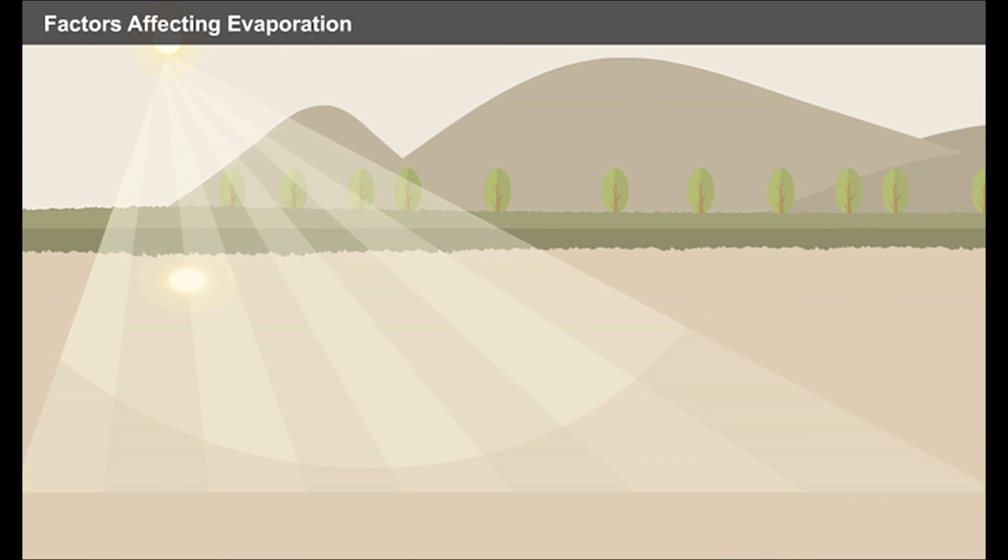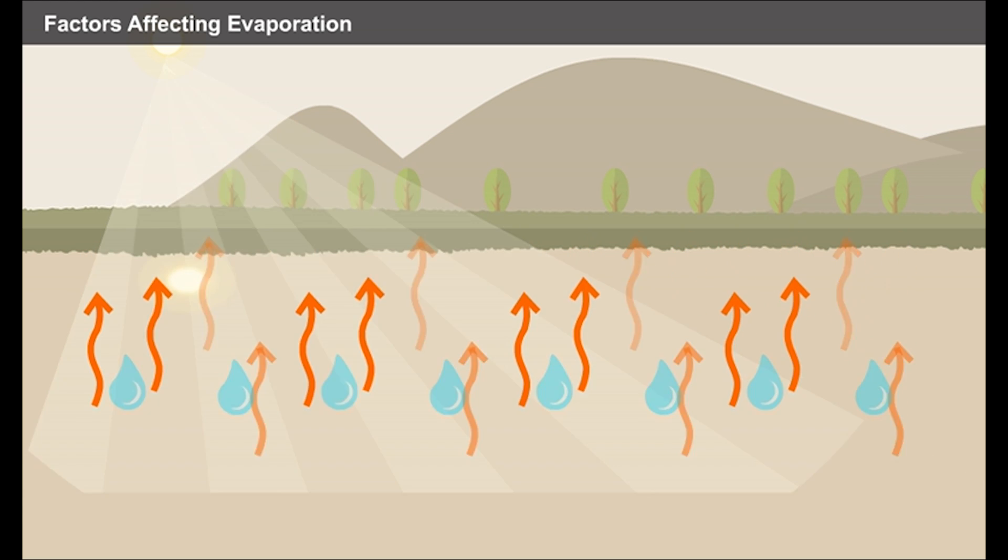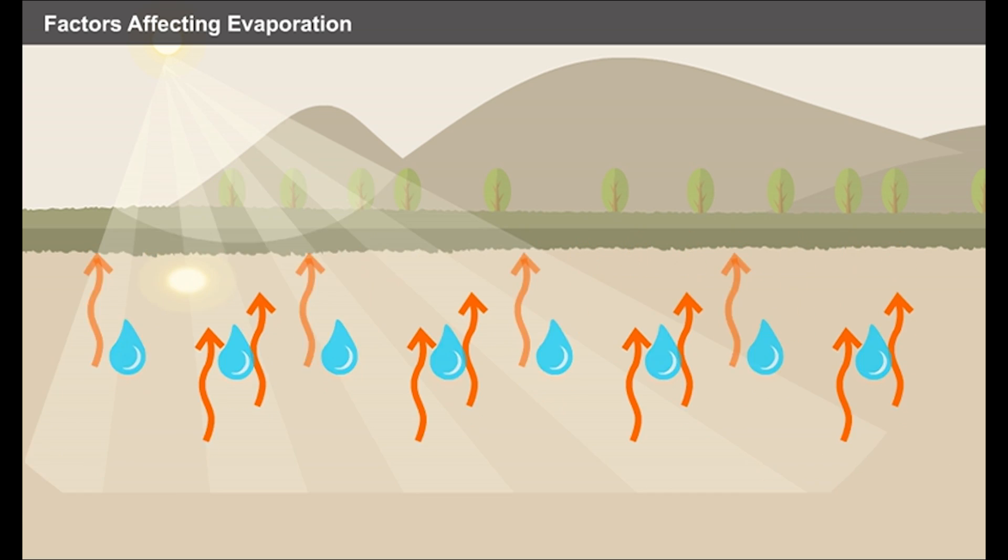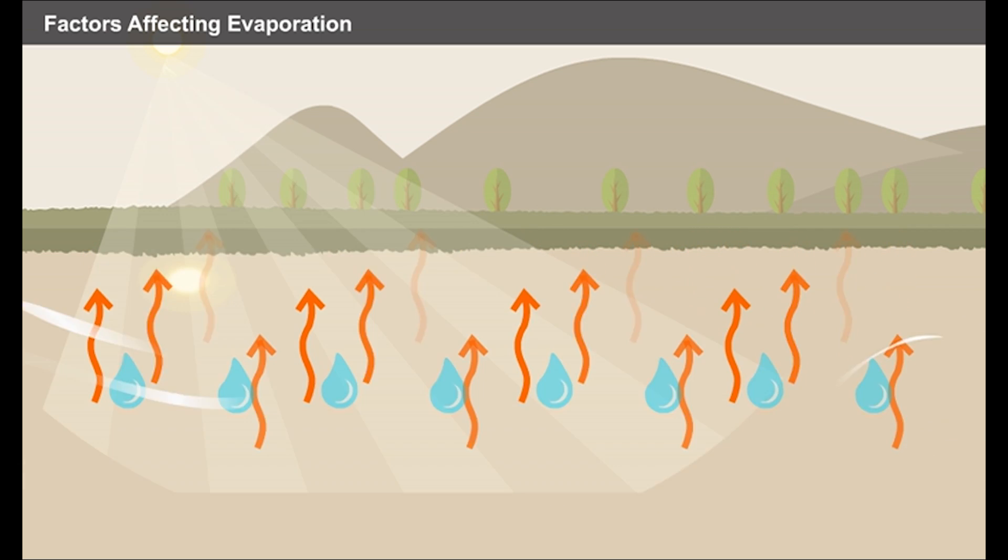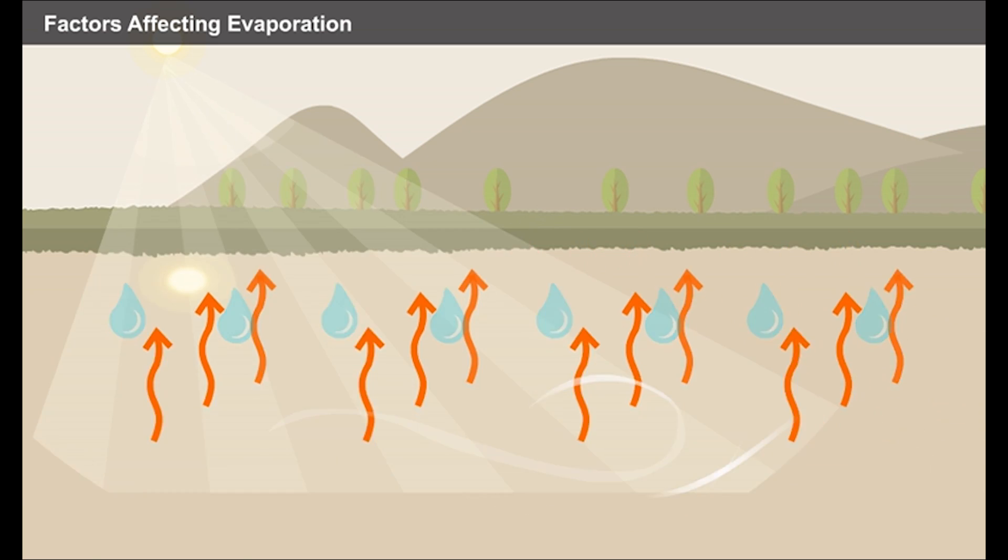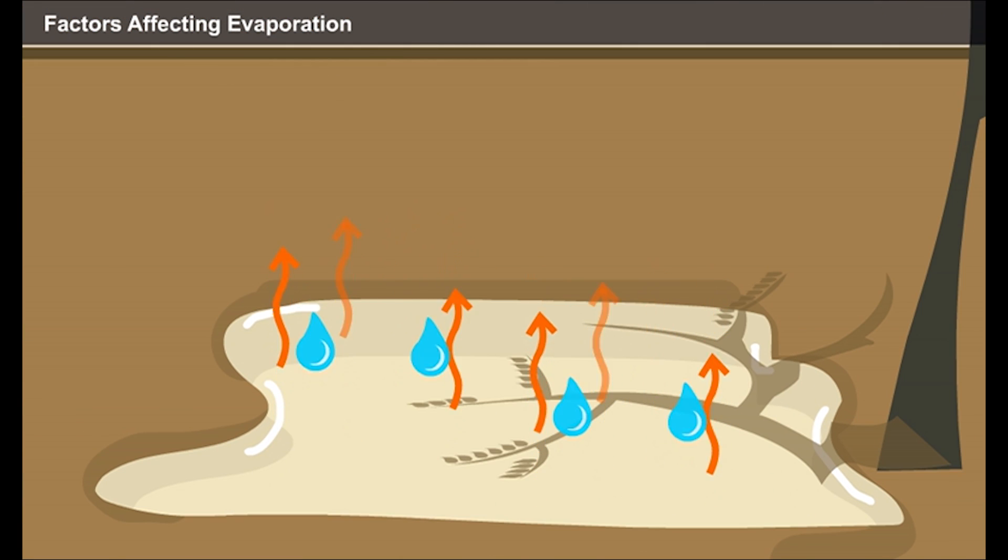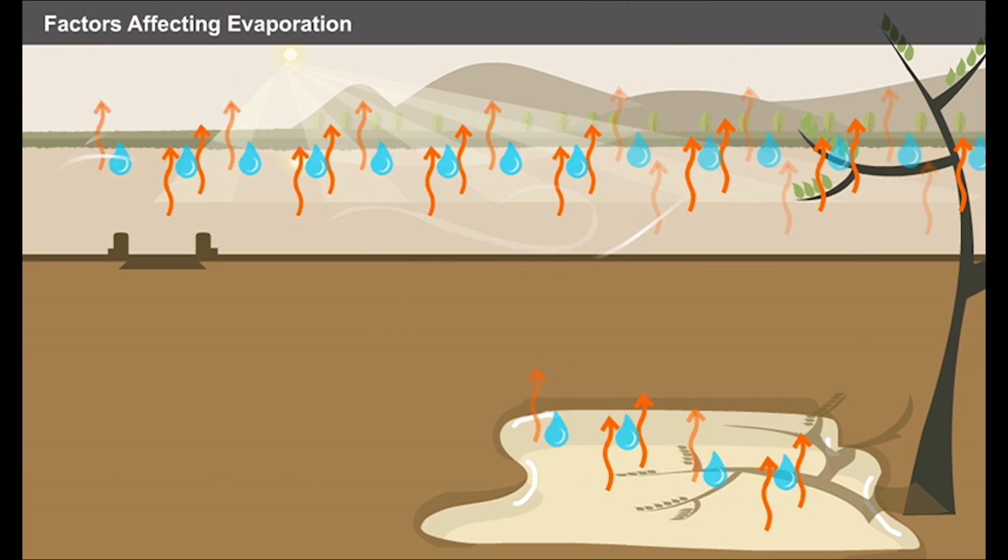Besides, the surface area of water bodies also affects the rate of evaporation. In case of large water bodies, the rate of evaporation is high due to the exposure of larger area to sunlight. Moreover, it also facilitates easy movement of wind on the water surface. On the other hand, the rate of evaporation is less for smaller water bodies. Thus, the surface area of water determines the rate of evaporation.